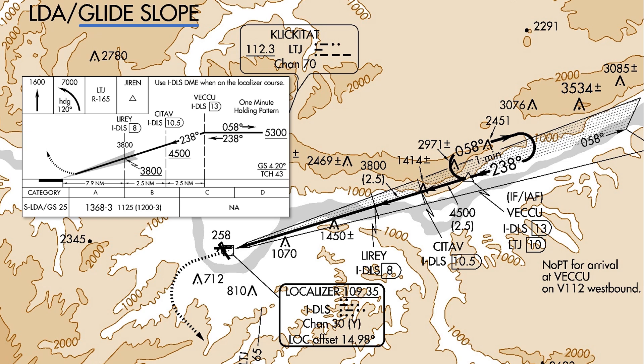It's important to keep in mind that this approach, along with any other LDA, is very much a non-precision approach. Even though we have vertical guidance on this approach and we will intercept the glide slope, think of this particular LDA approach like you would an LPV approach with a GPS. It's a non-precision approach and treated as such for purposes of things like alternate planning, but we can use the minimum as a decision altitude, executing a missed approach at that point on the glide slope.